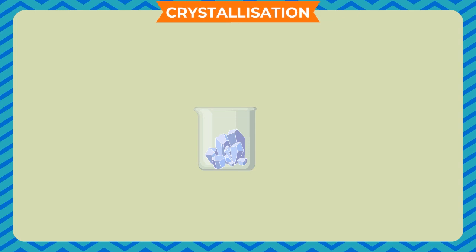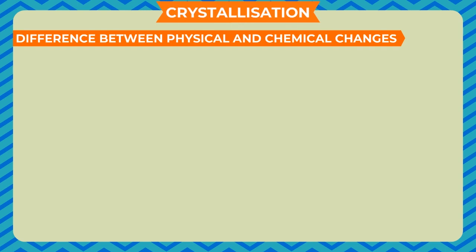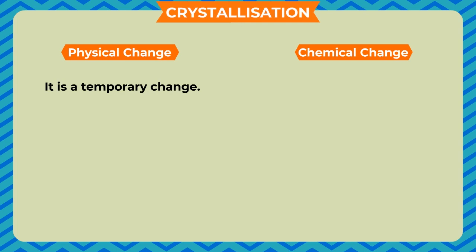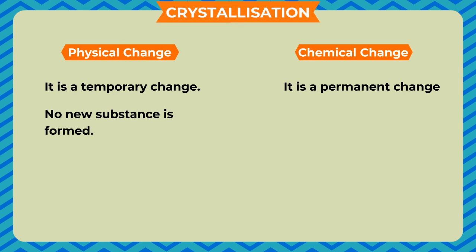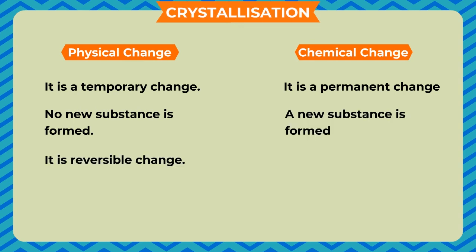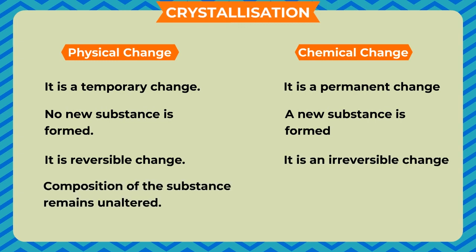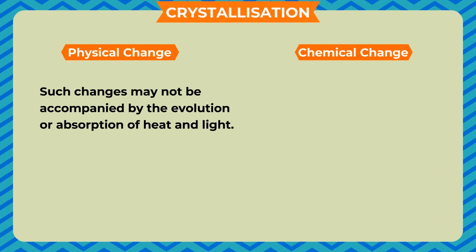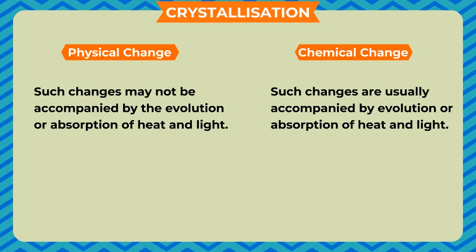Difference between physical and chemical changes: a physical change is temporary, while a chemical change is permanent. No new substance is formed in a physical change, whereas a new substance is formed in a chemical change. A physical change is reversible, while a chemical change is irreversible. The composition of the substance remains unaltered in a physical change, whereas a change in composition takes place in a chemical change. Physical changes may not be accompanied by evolution or absorption of heat and light, but chemical changes usually are.